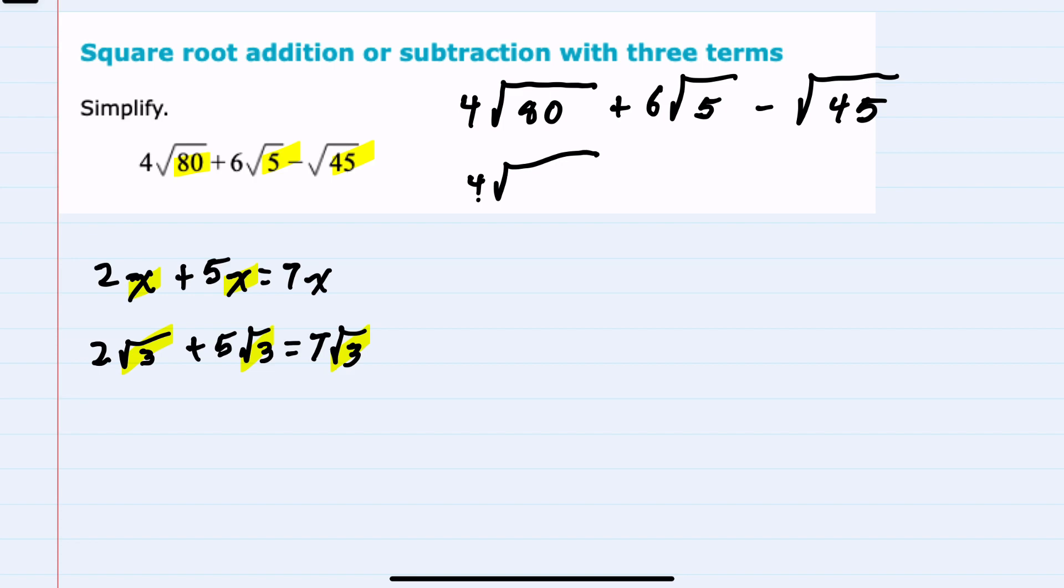As I start to simplify the first piece, the square root of 80, if I recall my perfect squares: 2² is 4, 3² is 9, 4² is 16, 5² is 25, and so on, I can rewrite this 80 as 16 times 5. The reason I would want to do that is because the 16 is a perfect square, and I can bring it out of the radical.